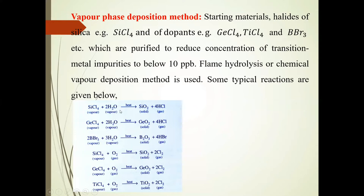Some typical reactions are given below. SiCl4 + 2H2O → SiO2 + 4HCl. These two are vapors and we get solid and gas. Similarly, GeCl4 + 2H2O → GeO2 + 4HCl. Again, 2BBr3 + 3H2O → B2O3 + 6HBr. SiCl4 + O2 → SiO2 + 2Cl2. TiCl4 + O2 → TiO2 + 2Cl2.